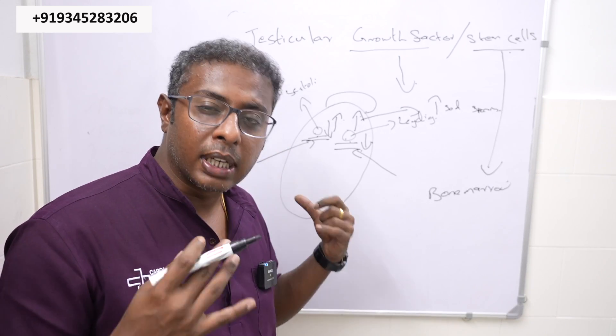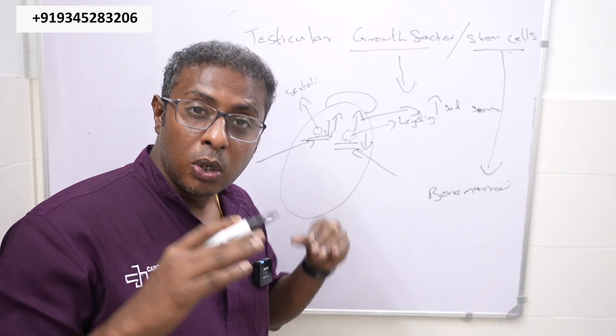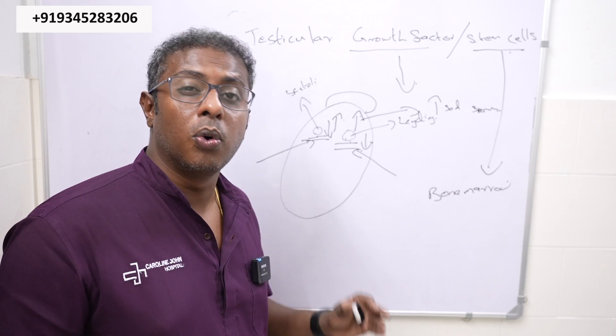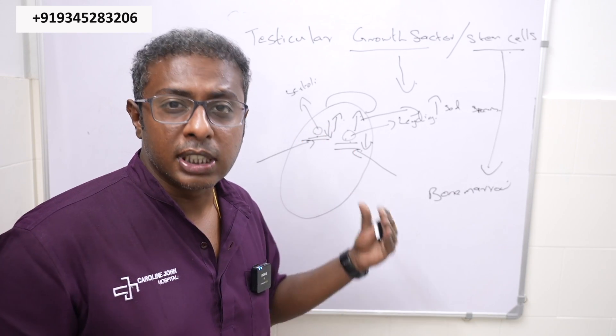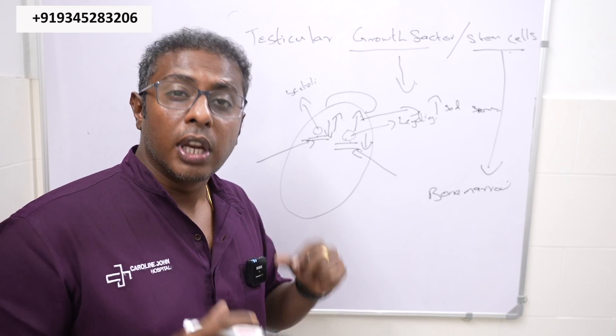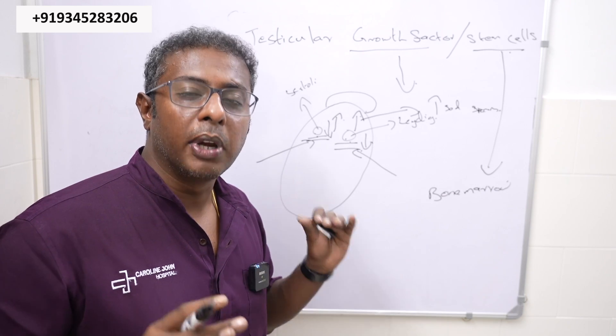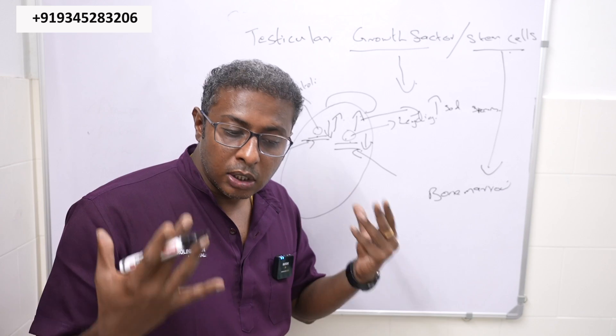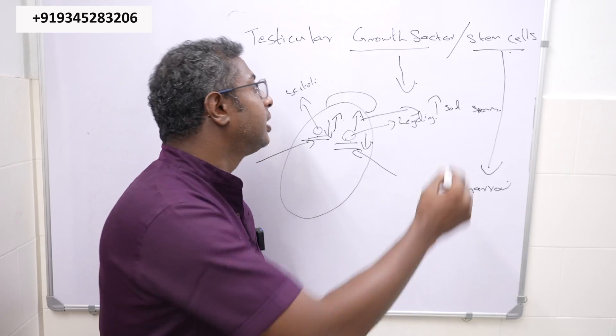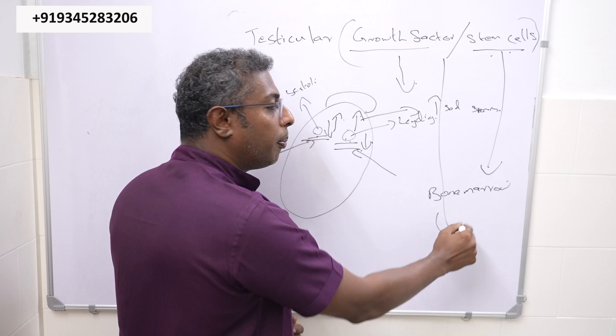This is how we try to improve your own sperm production to have your own biological baby. The concept of this growth factor or stem cell injection is to improve your own sperm production in order to have your own biological baby. For patients in whom donor sperm is suggested, these are the newer advances which help to have their own baby.